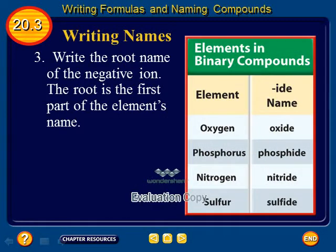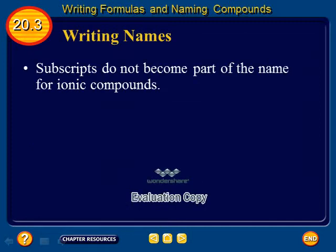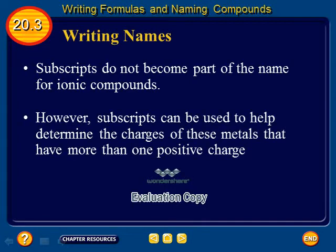Step 3: Write the root name of the negative ion. The root is the first part of the element's name. For example, oxygen becomes oxide and phosphorus becomes phosphide in a binary compound. Number 4: Add the ending '-ide' to the root. The table lists several elements and their '-ide' counterparts. Subscripts do not become part of the name for ionic compounds; however, subscripts can be used to help determine the charges of metals that have more than one positive charge.